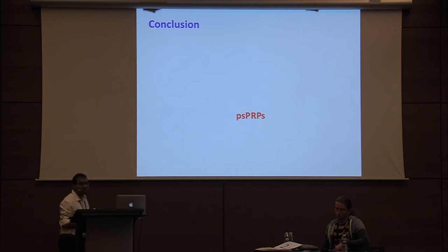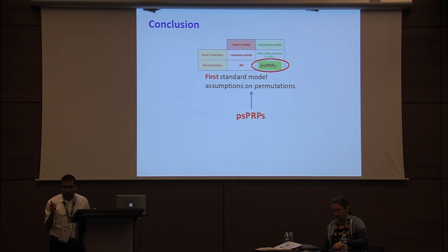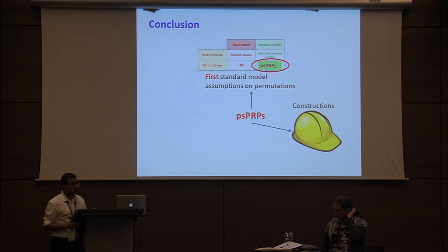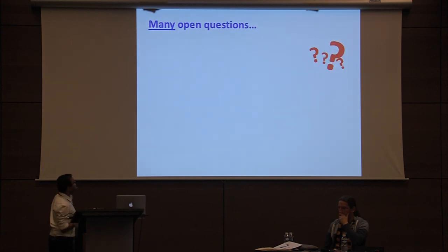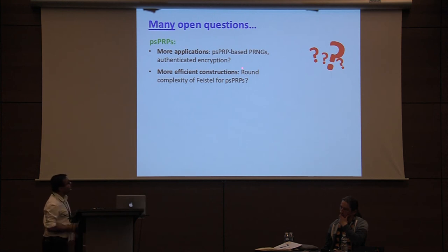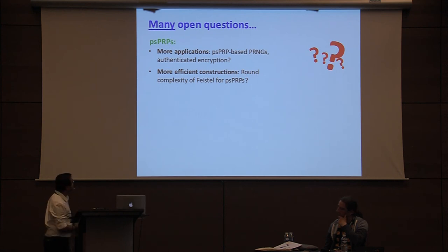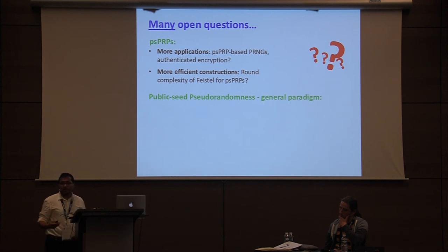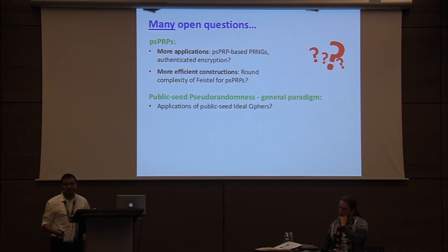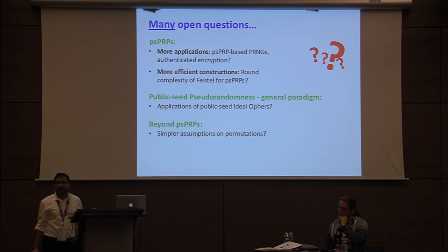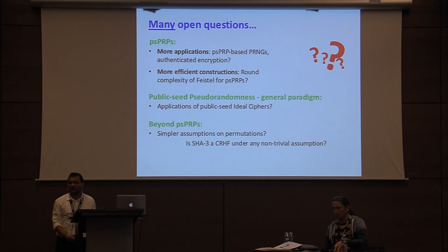In conclusion, we introduced the notion of PSPRPs — a framework that introduces the first standard model assumption on permutations — and discussed constructions of PSPRPs and their applications. Open questions include: can PSPRPs enable other applications like PRNGs and authenticated encryption; can we resolve the round complexity of Feistel for PSPRPs (we show five is sufficient but don't know if four works); public seed pseudorandomness is a general paradigm with PSPRPs and UCEs as special cases, and one could consider a public seed ideal cipher though we don't know of applications; and finally, since PSPRPs are a strong notion, simpler assumptions on permutations that allow proving collision resistance of the SHA3 hash function remain an open question.